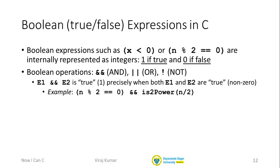The second expression e2 is the result of the recursive function call is2power. This function returns an int. In principle you could return 7 or -1 from it, but C will treat any non-zero value returned by is2power as true, and only if is2power returns 0 will it treat it as false.